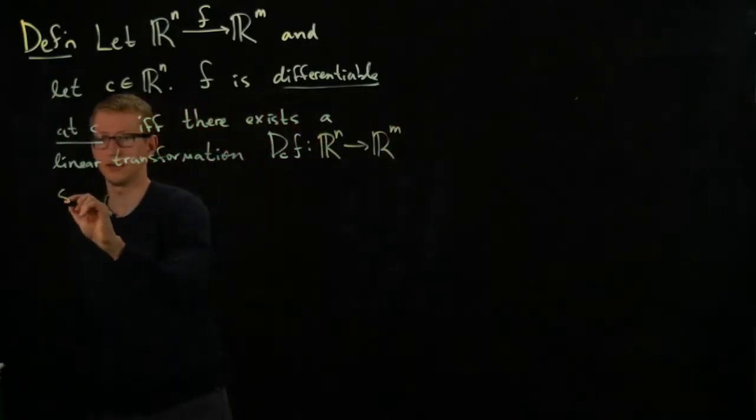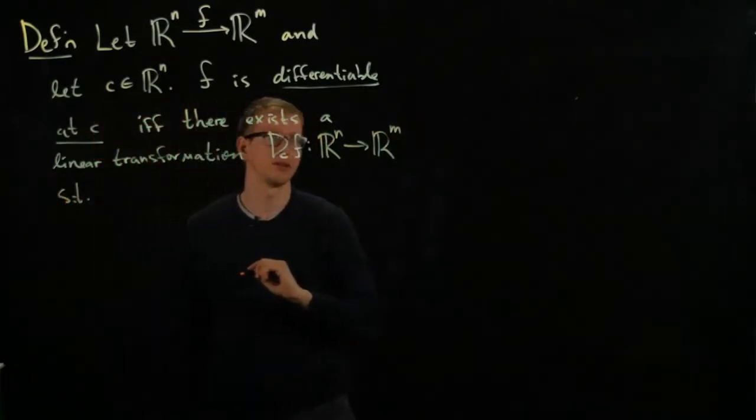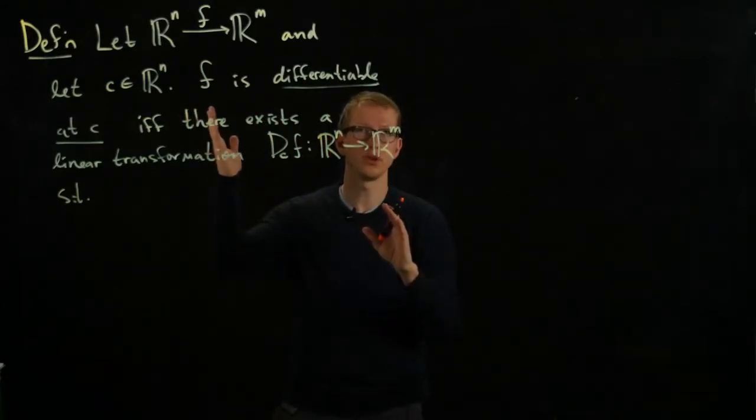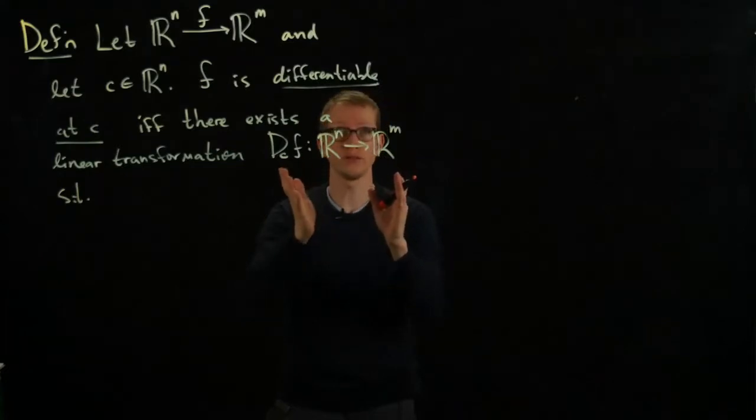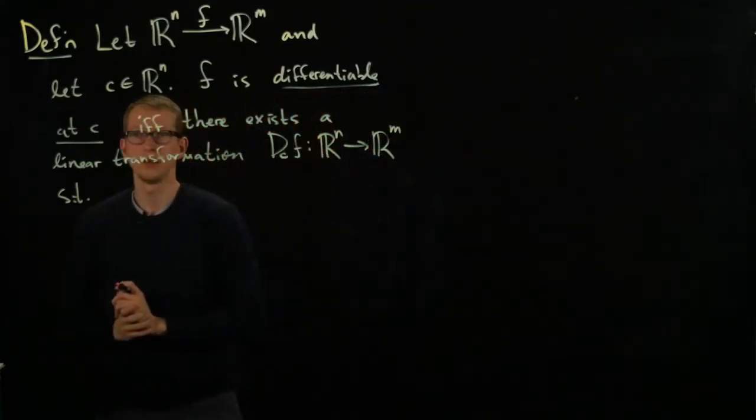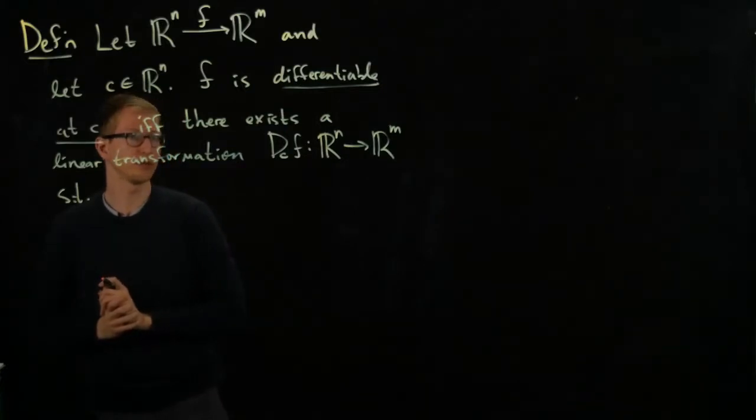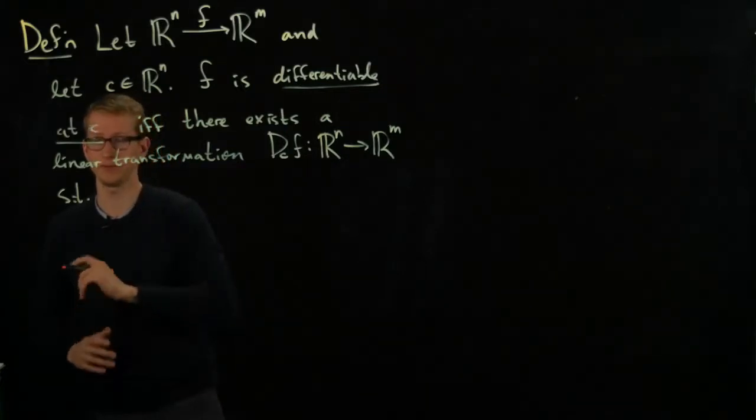Such that—and let me point out that we'll look at functions defined on different domains, such as A, and the linear transformation will still be defined on all of R^n—so there exists a linear transformation D of F at C.